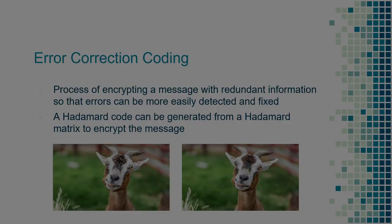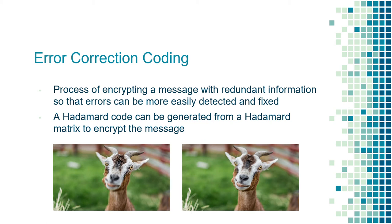The first is error correction coding. Error correction coding is a process whereby messages are encrypted with redundant information so that errors can be more easily identified and fixed. Hadamard matrices are used in order to encrypt these messages. To make better sense of this, let's use an example. Say you wanted to send a picture of this goat from the Earth to a friend on Mars. The picture is broken down into bits of zeros and ones and sent across the vastness of space.